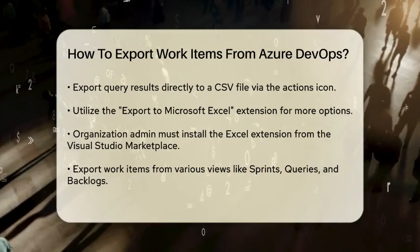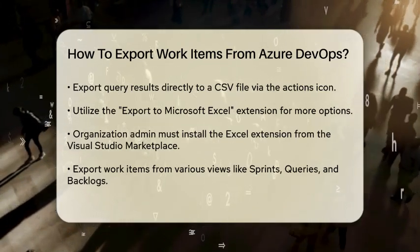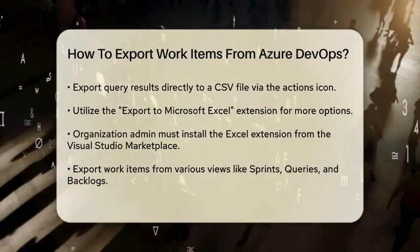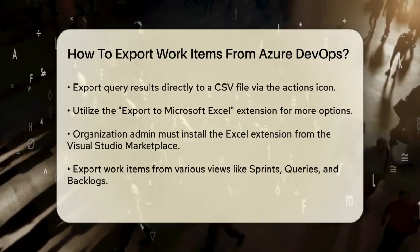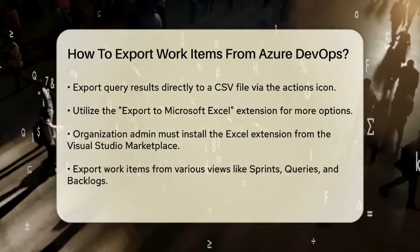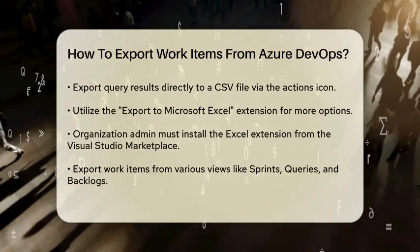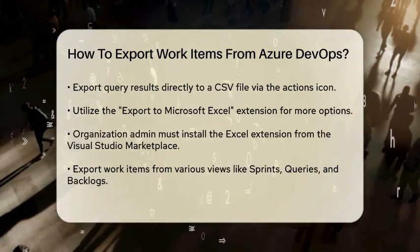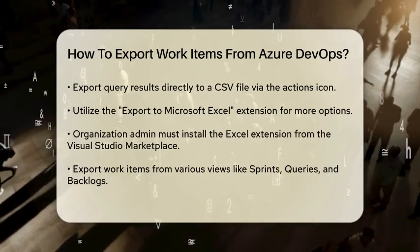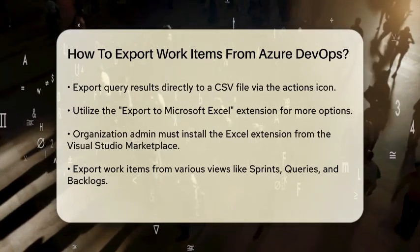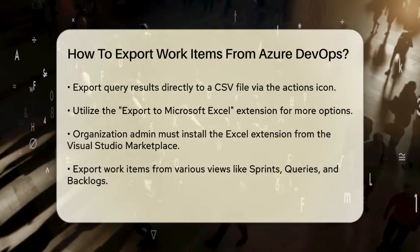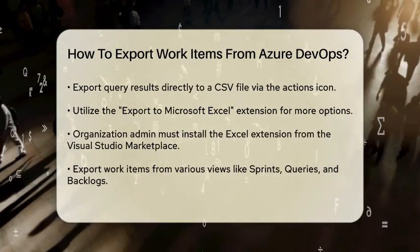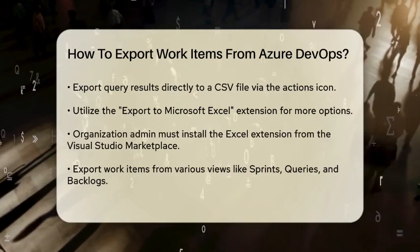Another powerful method involves using the Export to Microsoft Excel extension. Your organization admin needs to install the extension from the Visual Studio Marketplace. Once installed, you can export work items from various views such as sprints, queries, backlogs, or even individual work item details. Simply navigate to the desired view, select the items you want to export, open the context menu, and choose Export to Excel. This method allows you to customize your export using an intuitive modal.